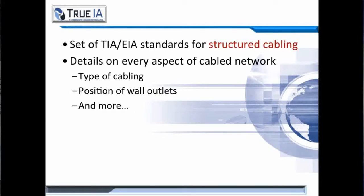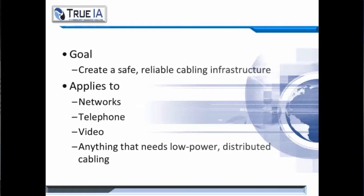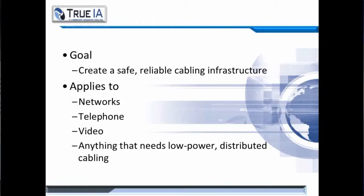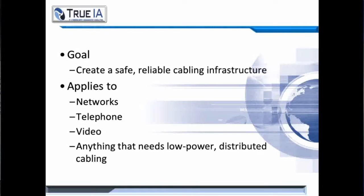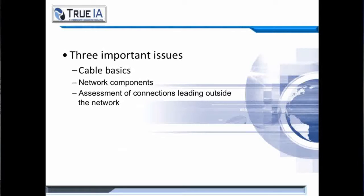The TIA-IA organization set the standards for what we call Structured Cabling. It details every aspect of a cabled network, from the type of cabling that you must use, the position of wall outlets, and a whole lot more. The goal was to create a safe and reliable cabling infrastructure. This applies to all networks — telephonic, video, anything that needs low-power distributed cabling. You need to understand three important issues: the cabling basics of Structured Cabling, what network components go into it, and understand the assessment of connections leading outside of the network.